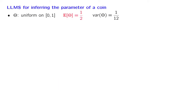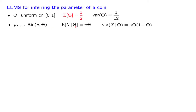Let us start by writing down what we know about the random variables in this problem. About theta, we know that it is uniform, so it has a mean of 1/2 and a variance of 1/12. About x, if you fix the bias of the coin, then the number of heads in n flips has a binomial distribution with parameters n and theta. But theta itself is a random variable, so this is a conditional distribution. Within the conditional universe, the mean is n times theta and the variance follows the usual binomial formula, with theta being a random variable.